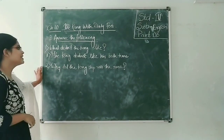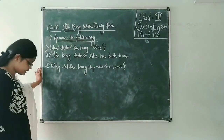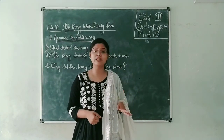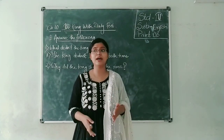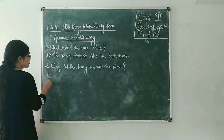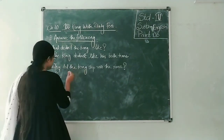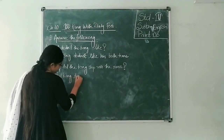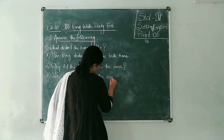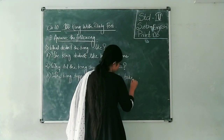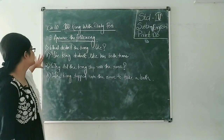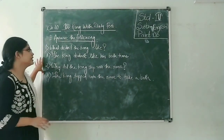Question number two: 'Why did the king step into the river?' The king stepped into the river to take a bath. Because he was smelling so much — it had been a long time since he had bathed — and the smell had now become unbearable even for himself. Write the answer: The king stepped into the river to take a bath. If you have not written yet, pause the video and write it down.